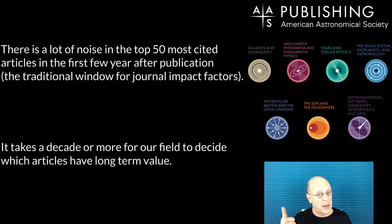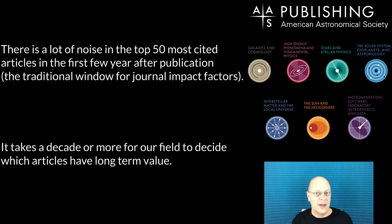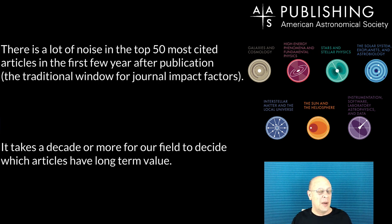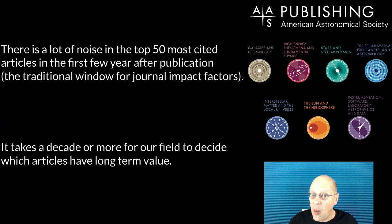So what are the takeaways from this exercise of the top 50 most cited articles over time? There are two primary takeaways. The short of it: there's a lot of noise and activity in the top 50 most cited articles in the first couple of years after publication. Interestingly, this is the traditional window for measuring journal impact factors — and that's exactly the window where there's all this evolution. In broad terms, articles valued one to two years after publication are generally not the same articles valued 10 or 20 years afterward. And that's my second point: it takes decades or more for our field to decide which articles have long-term value.